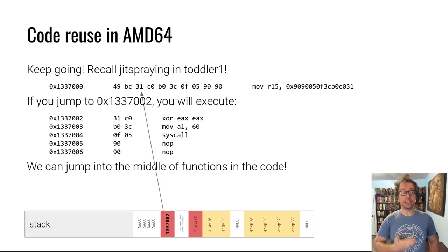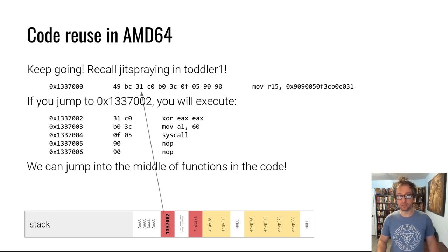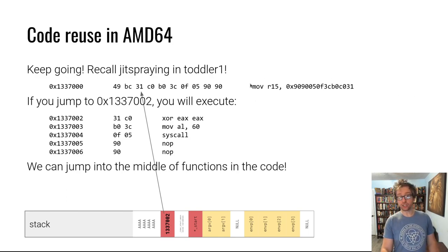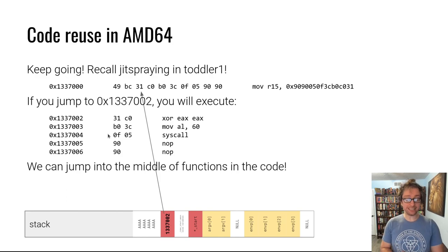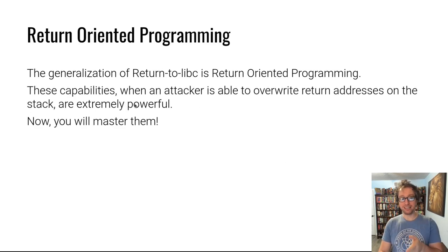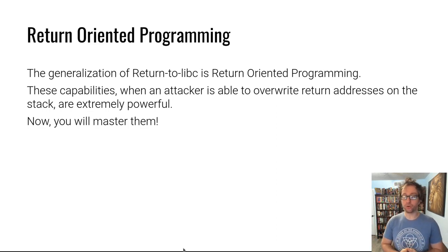You have gone further by performing a JIT spray attack in the first putting-it-together module. By jumping partway into an instruction — a nice benign-looking instruction generated by a just-in-time compiler — if the instruction is located at 0x1337000 and you jump to 0x1337002 and start executing from there, you actually execute something very different: in this case, an exit syscall. That is yet another step, and in this module we will learn to take the rest of the steps toward what is known as return-oriented programming.